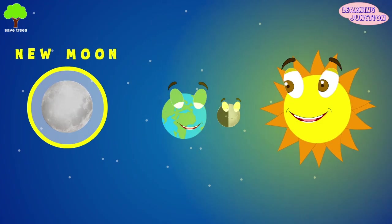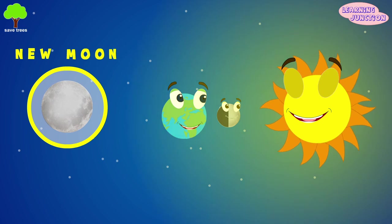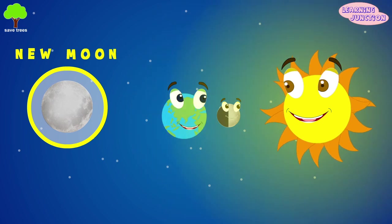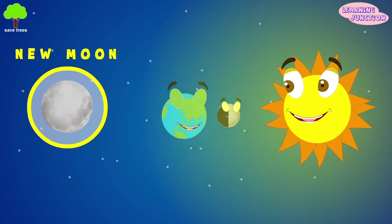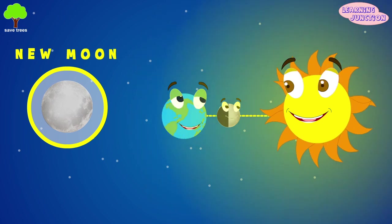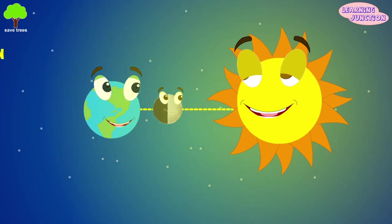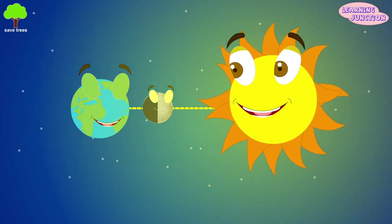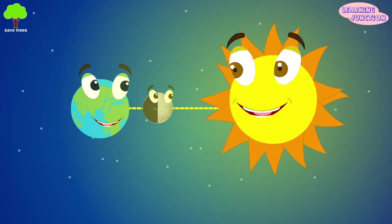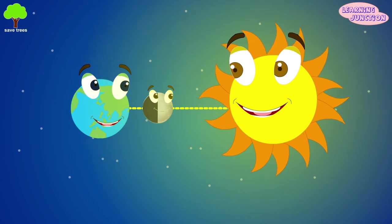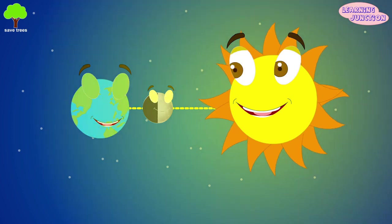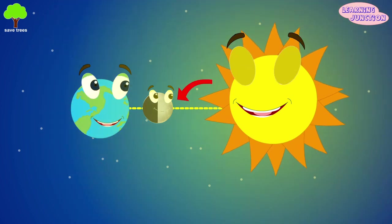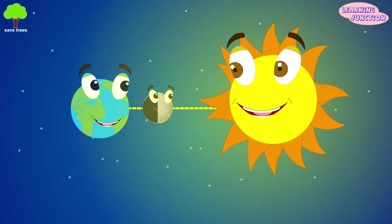New moon, or dark moon. The new moon appears when the moon and the sun are on the same side of our Earth. The moon is between the sun and the Earth and is lost in the dazzling light of the sun. We can't see a new moon because the lit portion is facing directly away from our Earth.